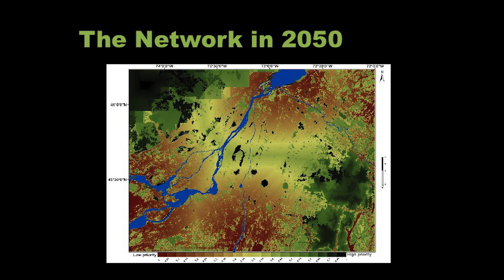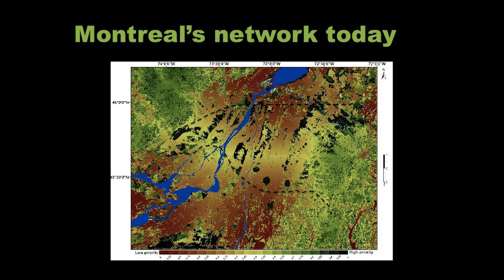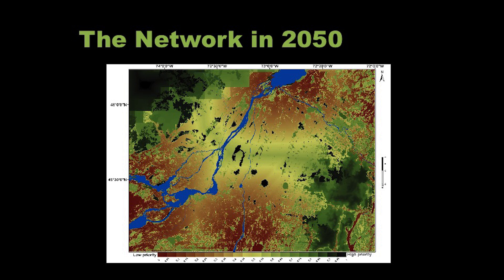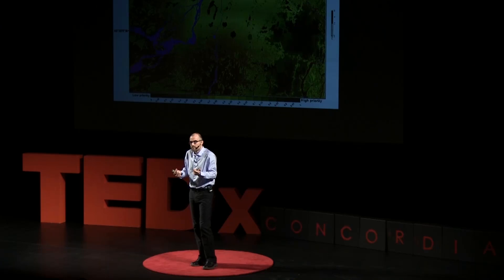But will it be there in the future? Under a business-as-usual scenario for Montreal — where we pass from 3.5 million to 5 million people and intensify our agriculture — what will happen? We ran scenarios of the future, a bit like climate scientists do, but for land use change. This is what the map looks like in 2050. We've lost a lot of the dark green — many of the fragments making a powerful contribution to connectivity — because they're being cut and climate change is changing the overall permeability of the landscape. We still have that corridor to the north, but it's now eroded, and probably not good enough.